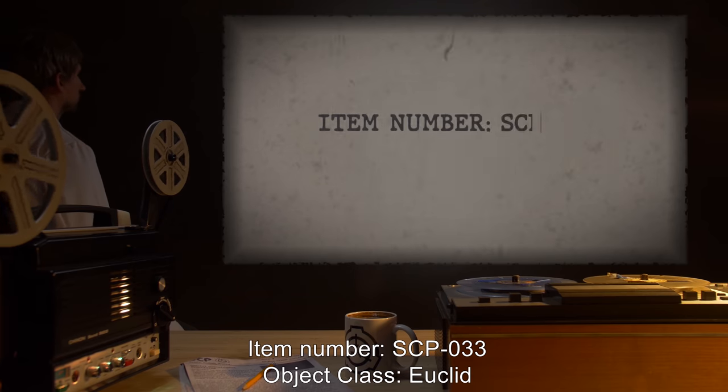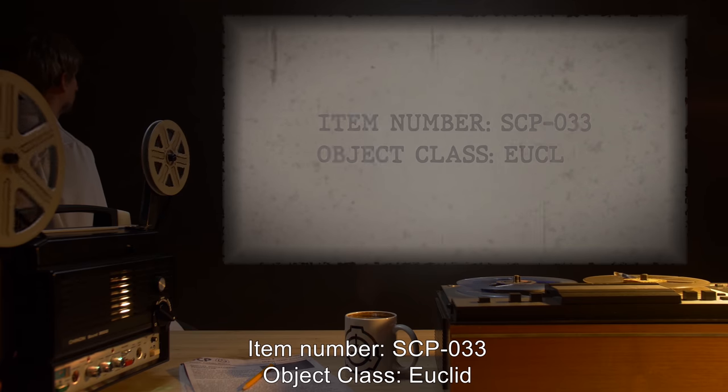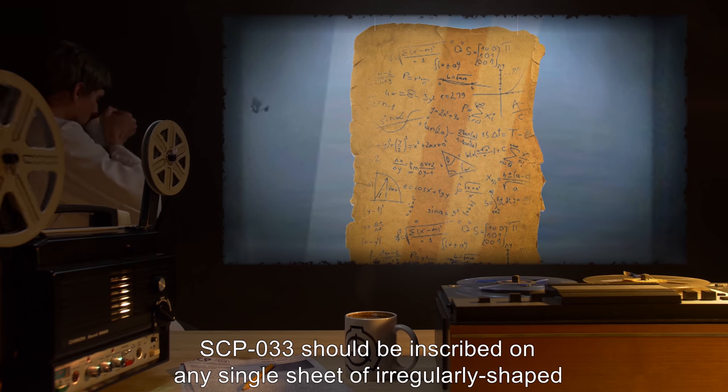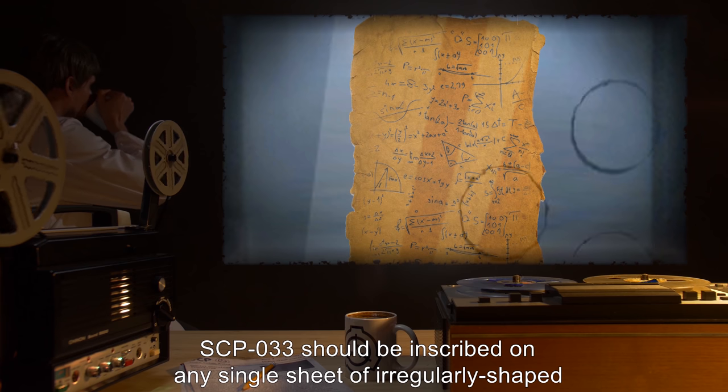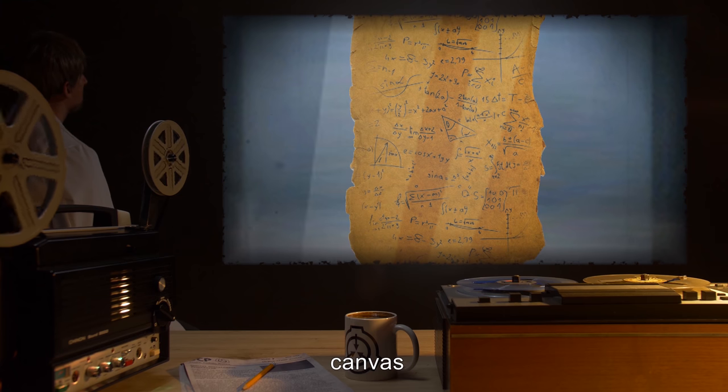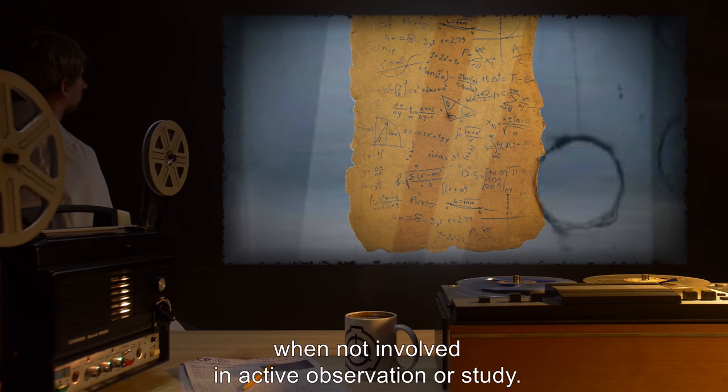Item Number SCP-033, Object Class Euclid. Special Containment Procedures: SCP-033 should be inscribed on any single sheet of irregularly shaped and handcrafted paper, papyrus, canvas, or vellum when not involved in active observation or study.